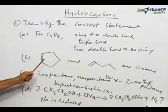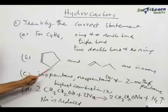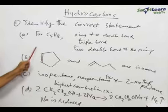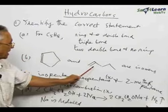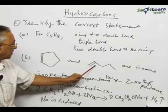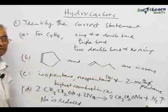The second statement says that the two structures, namely cyclopentene and 1-pentene, are isomers.